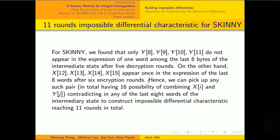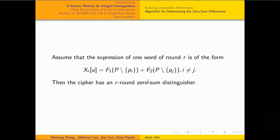For SKINNY, we found 16 11-round impossible differential characteristics. Now, we turn to zero sum differential. Assume the expression of one word over round R is of the form with two sub-functions. Pi is independent of F1 and Pj is independent of F2. Then the cipher has an R-round zero sum distinguisher.